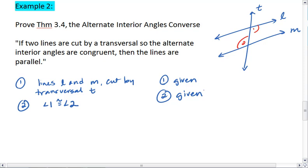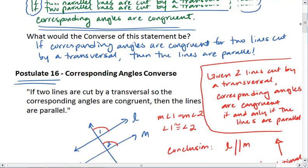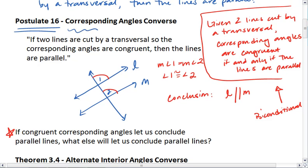From here, we need to think about what we can use already to prove parallel lines. The only thing we have in our list that proves parallel lines right now is postulate 16, the corresponding angles converse.